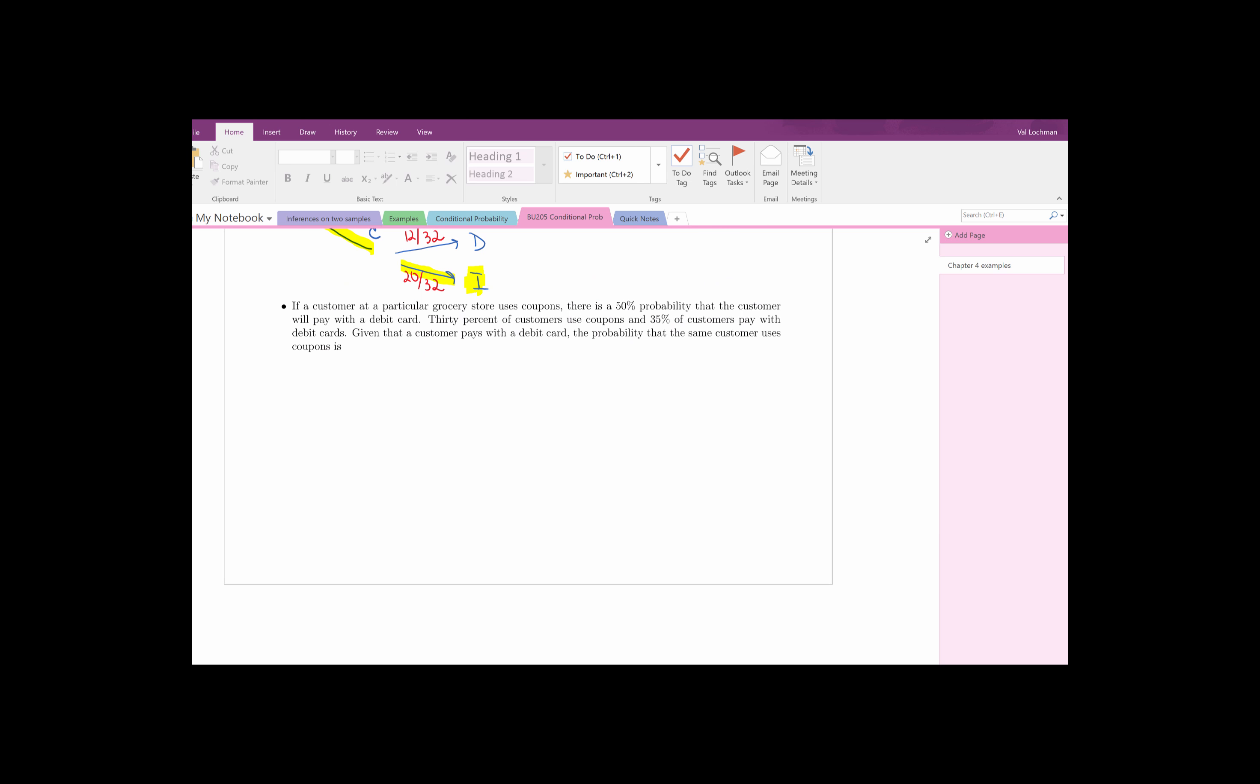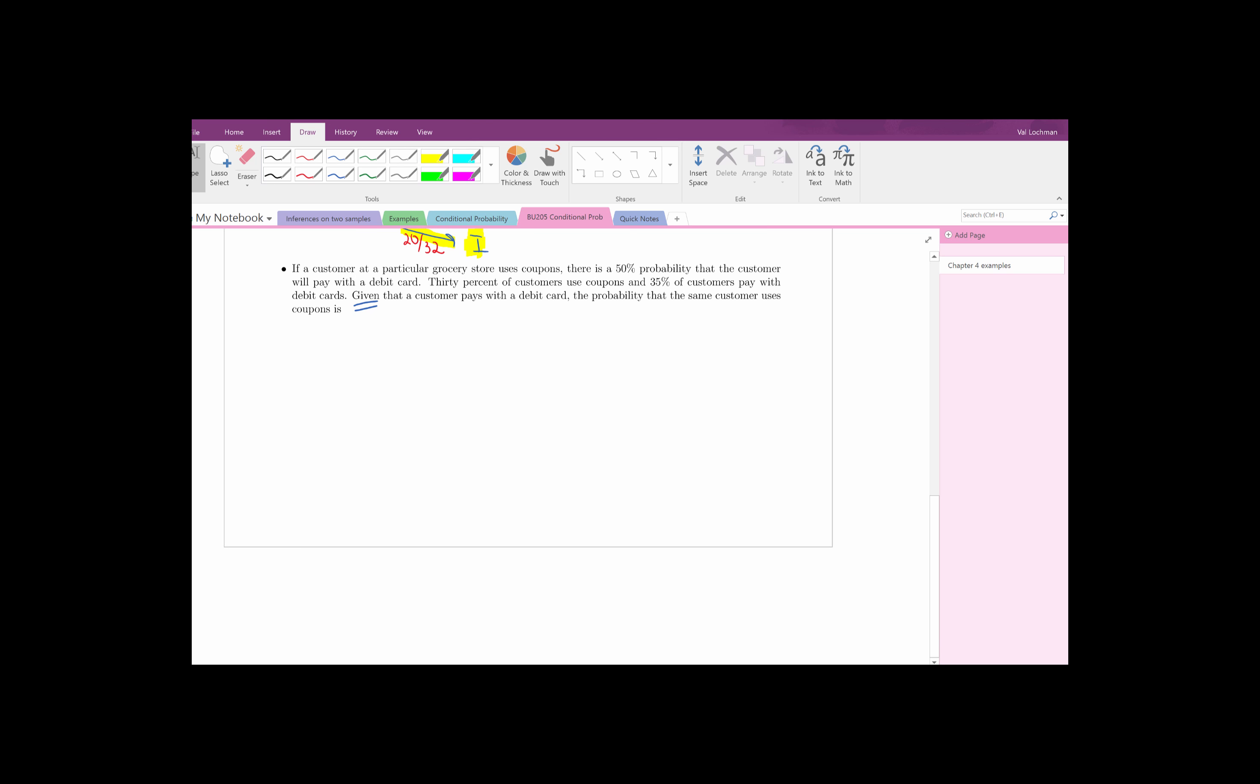This one says the following: if a customer at a particular grocery store uses coupons, there is a 50% chance that the customer will pay with a debit card. Then we have 30% of all customers use coupons and 35% of all customers pay with debit cards. Given that a customer pays with a debit card, find the probability that the same customer uses coupons.